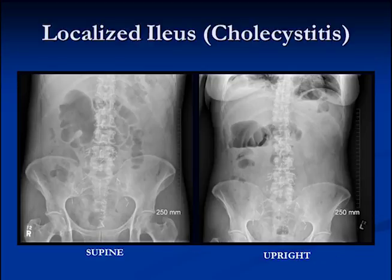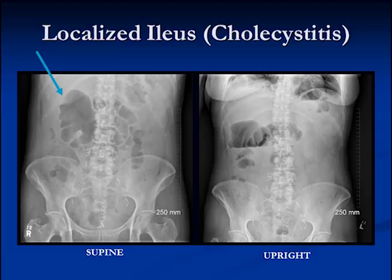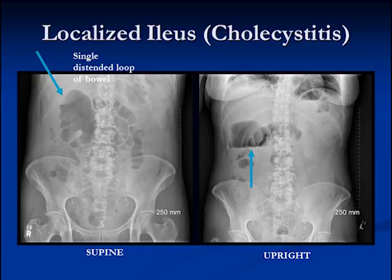This is a localized ileus sometimes seen in patients with gallbladder problems or inflammation. Here you can see a distended loop of large bowel, probably at the hepatic flexure. On the upright view there's an air-fluid level in that bowel, implying that that small loop is probably paralyzed. There are also mildly distended small bowel loops around there as well, and this is what we would call a localized ileus.